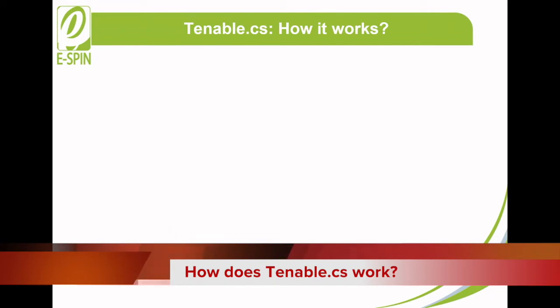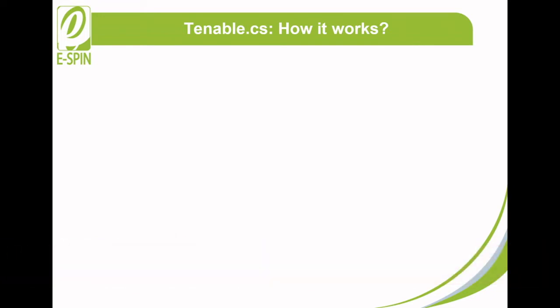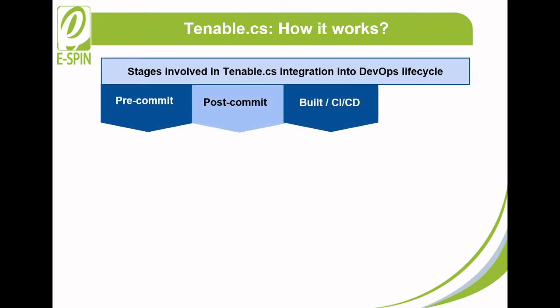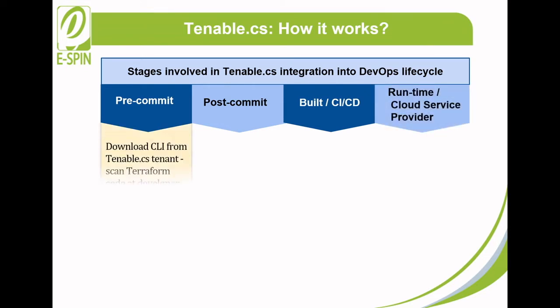How does Tenable CS work? Tenable CS offers DevSecOps and Shift-Left security with integrated controls for development and runtime workflows. By focusing on infrastructure as code, Tenable CS seamlessly integrates into your DevOps lifecycle and scans infrastructure as code such as Terraform and Kubernetes YAML. The integration occurs in various stages: pre-commit stage, post-commit stage, build stage or CI/CD, and runtime or cloud service provider.